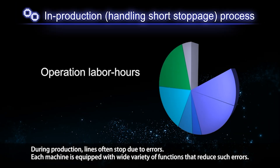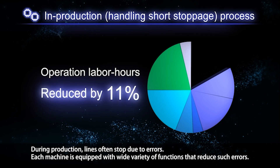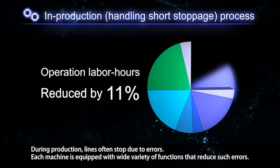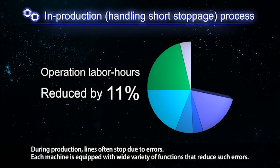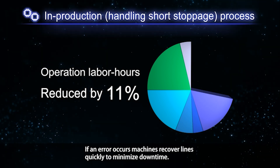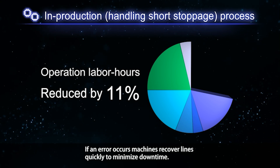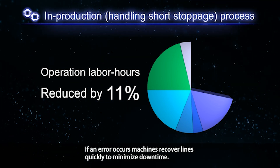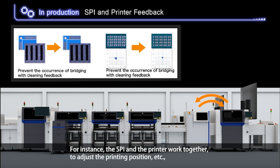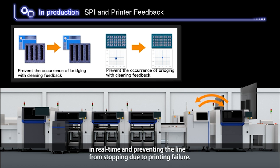During production, lines often stop due to errors. Each machine is equipped with a wide variety of functions that reduce such errors. If an error occurs, the machines recover lines quickly to minimize downtime. For instance, the SPI and the printer work together to adjust the printing position in real time, preventing the line from stopping due to printing failure.